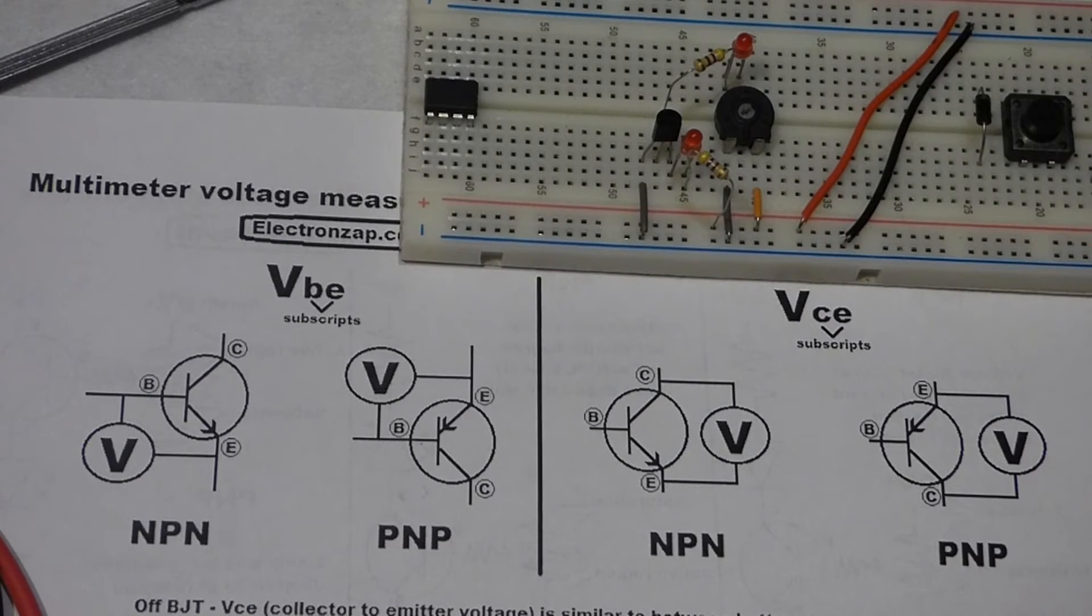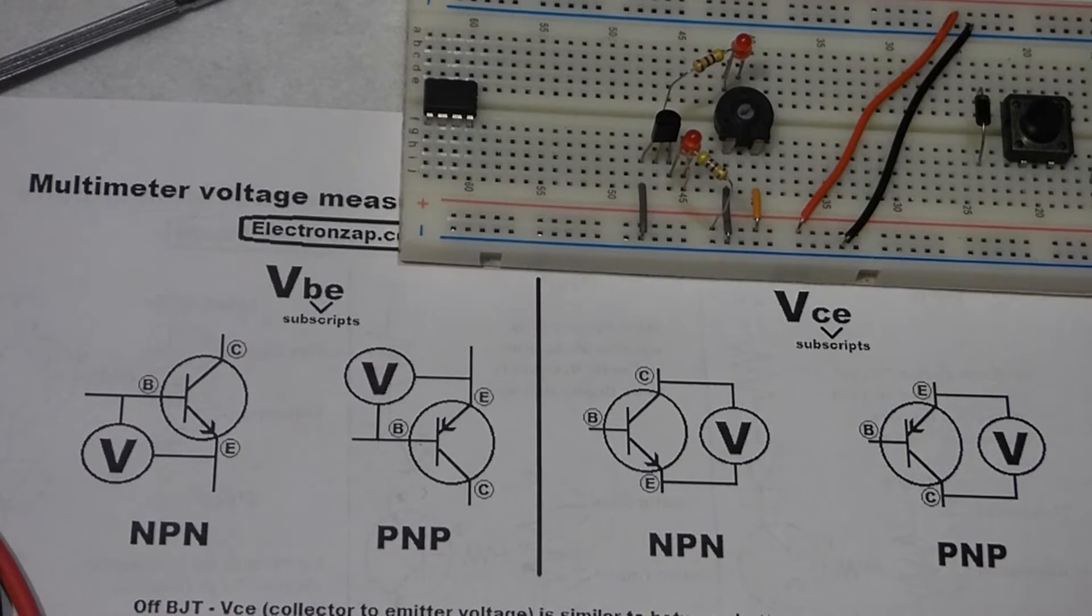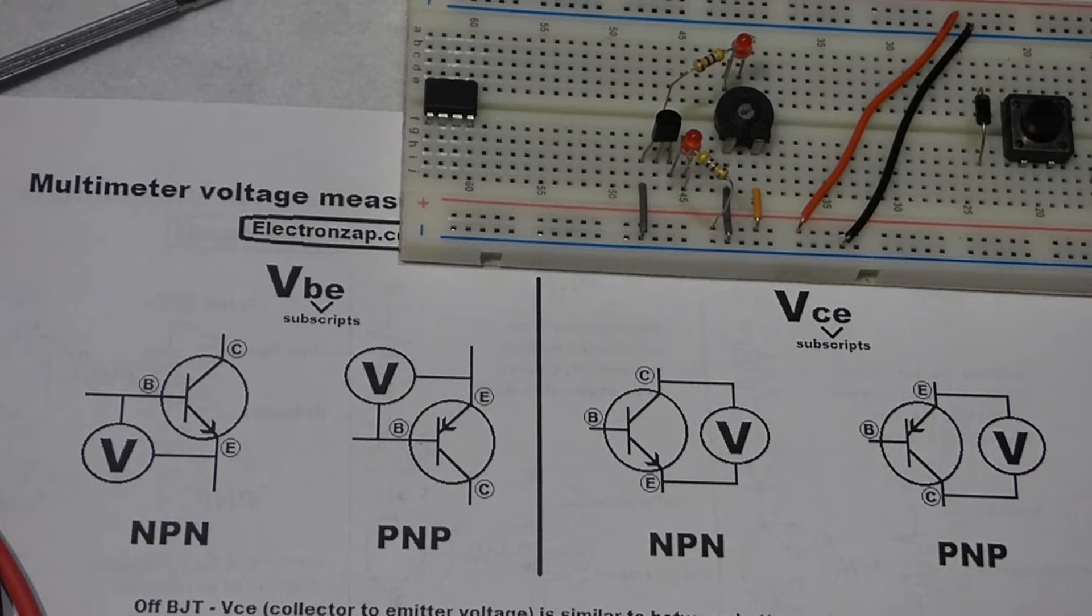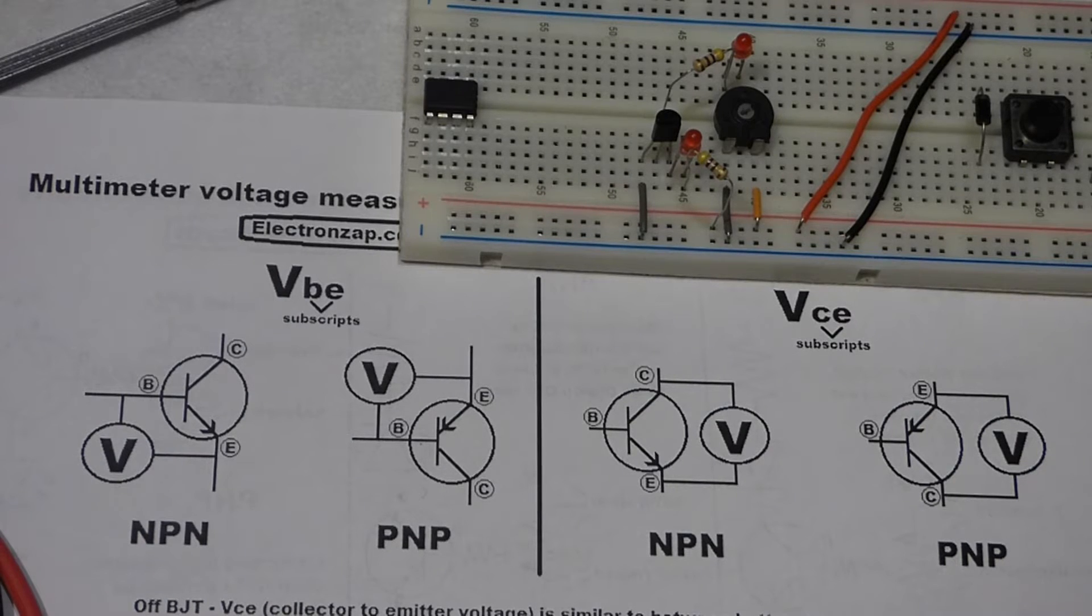So now in this video we're going to be taking some voltage readings using a multimeter of this transistor demonstration circuit I've been using in recent videos. In this video we're going to focus on the voltages across the transistor.